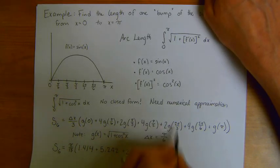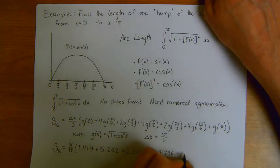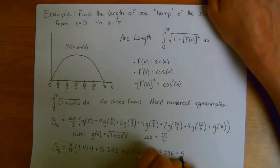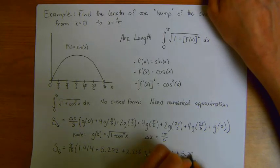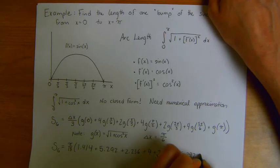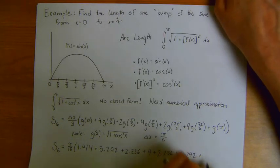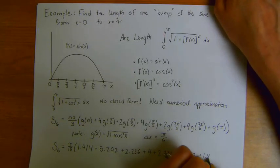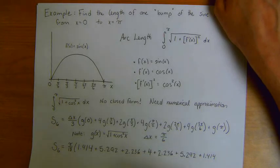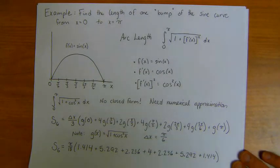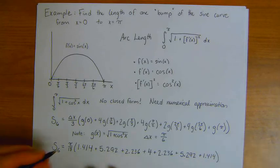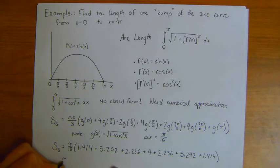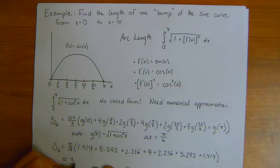2.236 is 2 times g of 2 pi over 3, plus 4 times g of 5 pi over 6 is 5.292 again. And then g of pi is 1.414. And if you type that all into your calculator, you find out that the Simpson's approximation yields something similar to 3.82.